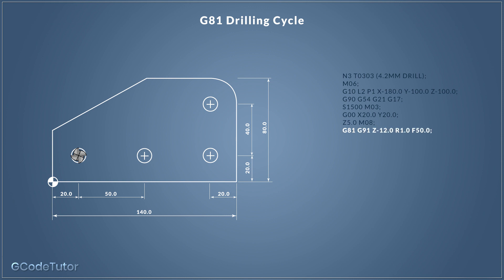Now we get to the line this lesson is all about — this is our G81 drilling cycle line. G81 tells the machine that we wish to use a drilling cycle. Normally the machine would automatically switch to incremental mode at this time, but some machines get confused, so I've added G91 which is our incremental G-code mode. It's more of a safety feature, because some machines will expect you to switch to incremental mode at this point while others will automatically assume it. If you wish to know how your machine behaves, check the machine manual.